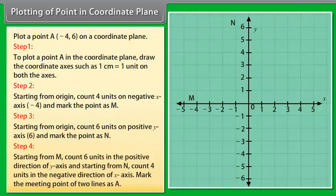Step 4: Starting from M, count 6 units in the positive direction of y-axis and starting from N, count 4 units in the negative direction of x-axis. Mark the meeting point of two lines as A.